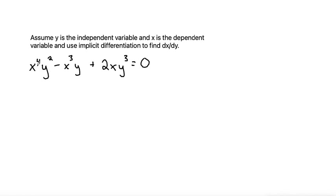The first term is a product of two functions of Y, so we need to use the product rule. The product rule says if we have F times G and we're taking the derivative of that, that is the derivative of the first times the second plus the derivative of the second times the first, or that's at least the way that I tend to like to write it.